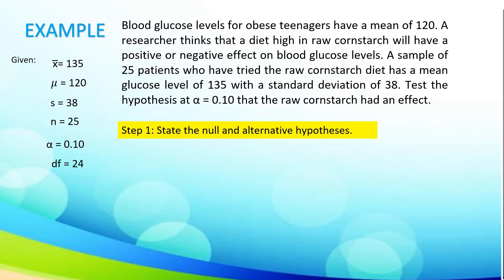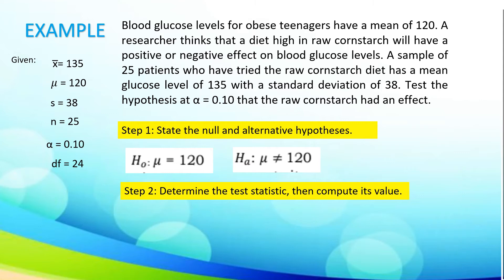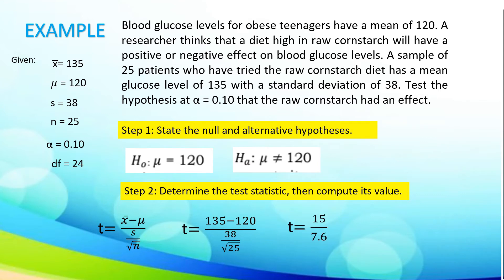The degree of freedom is 24. Let us first determine the null and alternative hypothesis. Our null hypothesis: mu is equal to 120. Our alternative hypothesis: mu is not equal to 120. To identify the test statistic, we are going to use the t-test. Using the formula: t equals x-bar minus mu divided by the standard deviation over the square root of n. Substituting the given, we have 135 minus 120 over the square root of 25. We have 135 minus 120, which is 15, and 38 divided by the square root of 25 is 7.6. The computed t-value is 1.974.